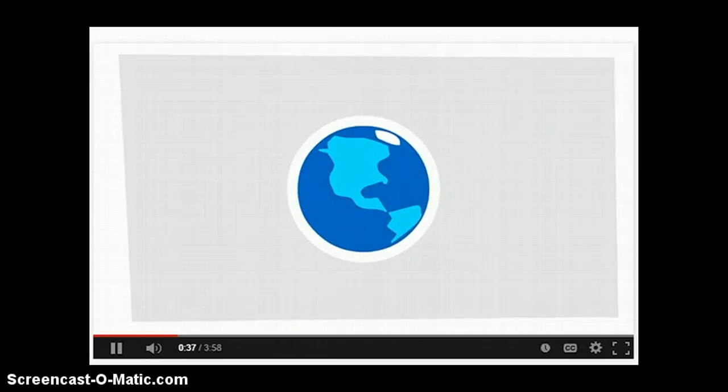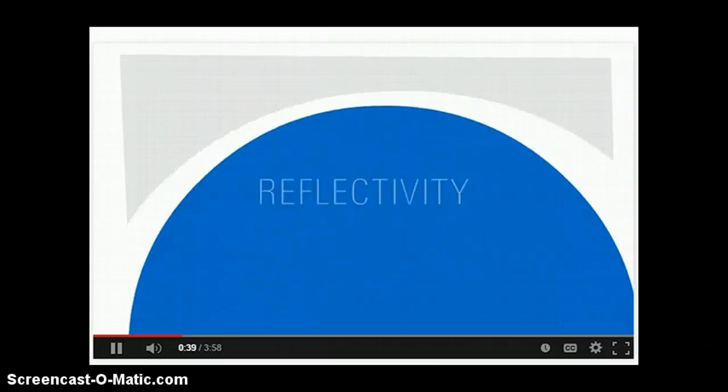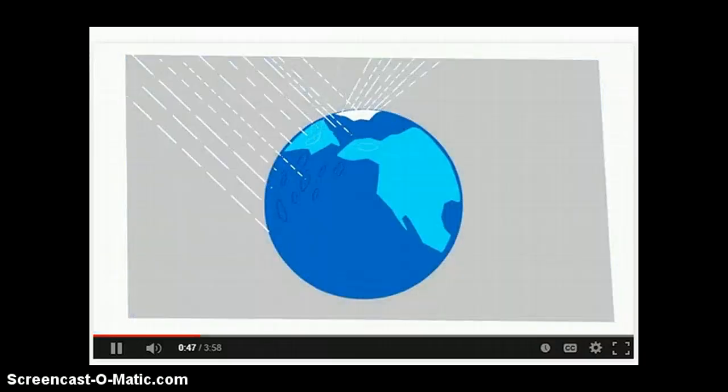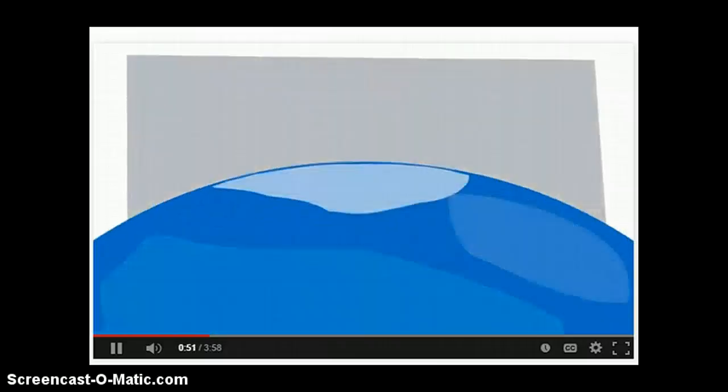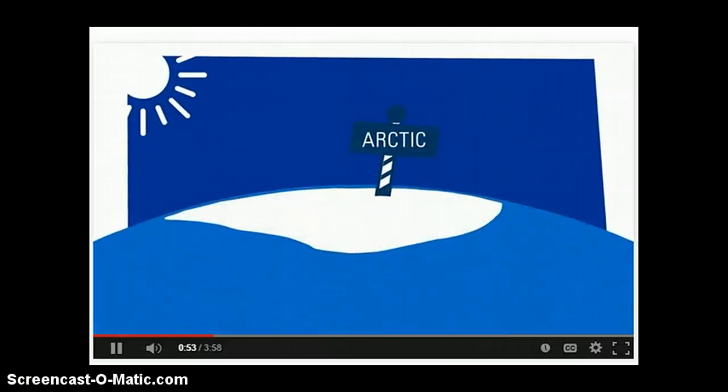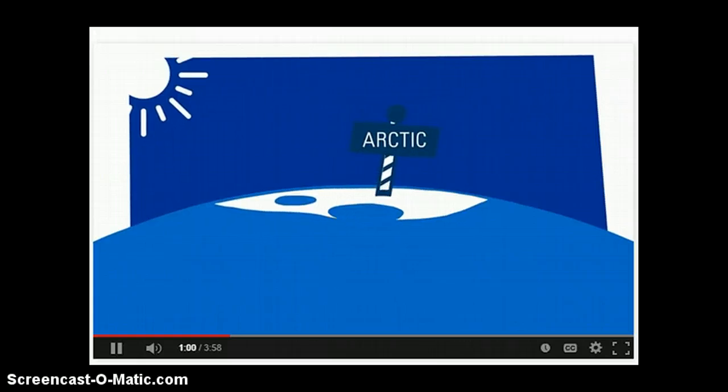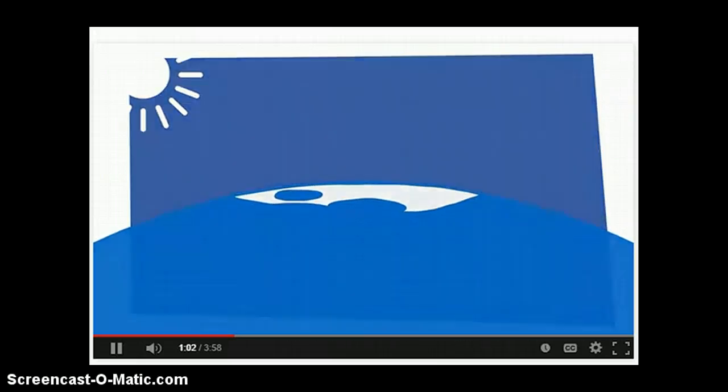One major type of climate feedback involves reflectivity. White surfaces like snow and ice are very effective at reflecting the sun's energy back into space, while darker land and water surfaces absorb much more incoming sunlight. When the Arctic warms just a little, some of the snow and ice melts, exposing the ground and ocean underneath. The increased heat absorbed by these surfaces causes even more melting, and so on.